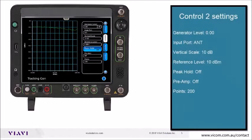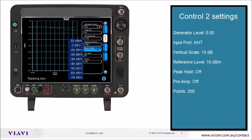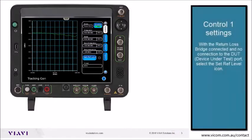Now CTRL-2 settings: set the generator level to 0, input port to antenna, vertical scale to 10 dB, set the reference level to plus 10 dBm, peak hold off, preamp off, and 200 points.